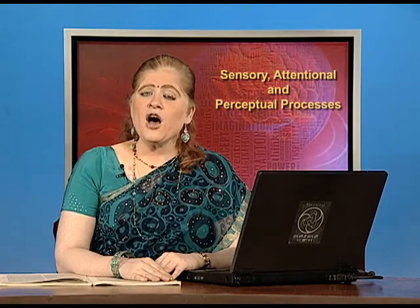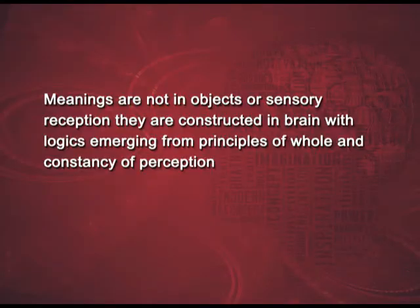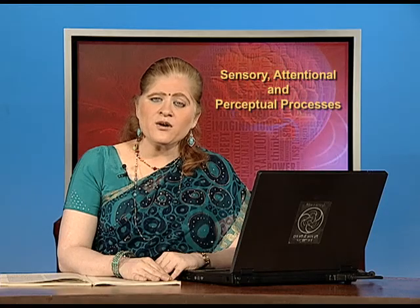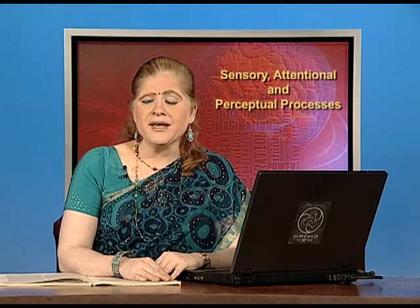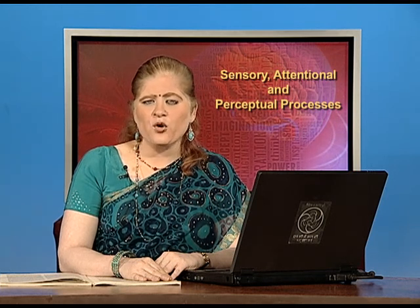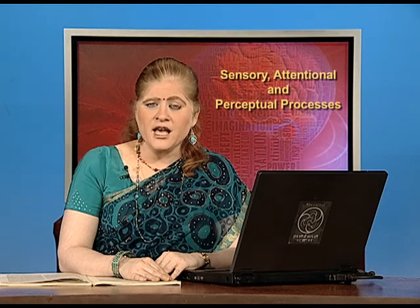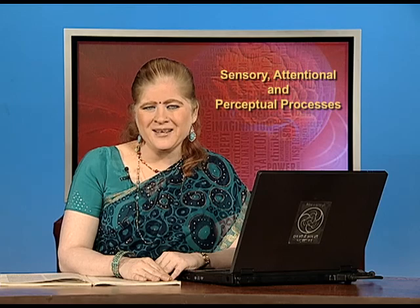By now you are able to understand and appreciate the fact that meanings are not contained in objects or sensory reception. They are rather constructed in the brain with images emerging from principles of whole and with the help of constancies of perception. The individual differences of the perceiver also play a huge part in how meanings are constructed. In the next and the last part, we shall deal with the very interesting concept of illusion and also see how we perceive images in three dimensions. Till then, happy learning. Thank you.